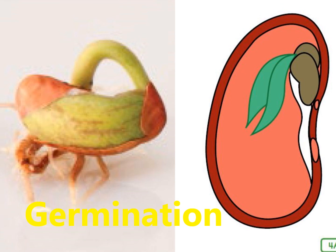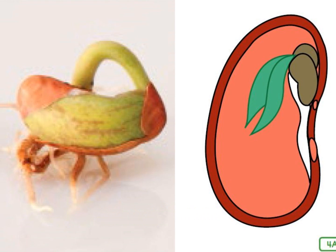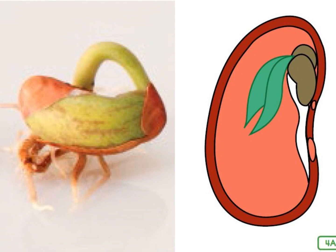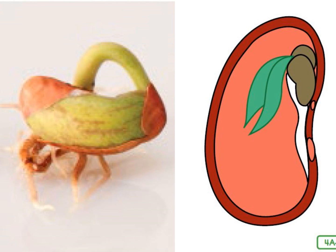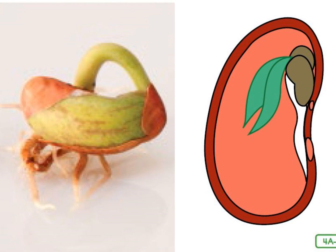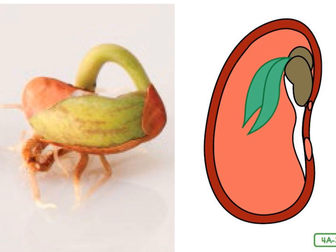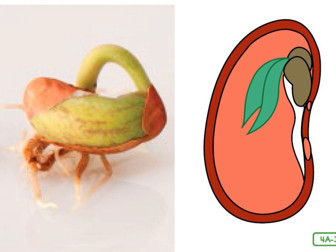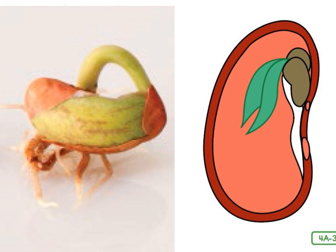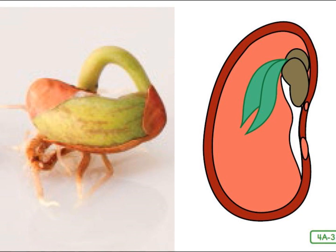A flowering plant begins its life cycle as a seed. Seeds need special conditions to germinate, or begin to grow. Spring provides seeds with the right conditions to grow. Therefore, the life cycle of a flowering plant begins in the spring. In spring, there is more sunlight and temperatures are warmer. Seeds need just the right amount of light from the sun, nutrients from the soil, and water in order to grow.